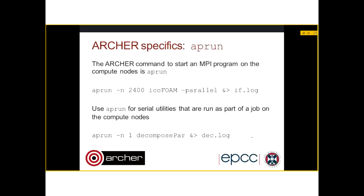You should all know that mpirun does not exist on Archer — it's aprun. So when you're running a parallel application, it'll be 'aprun -n' times the number of processes and '-parallel'. If you're also running serial utilities as part of a job on the compute nodes, make sure you use aprun as well — 'aprun -n 1' will run as effectively one task. Don't miss this out. If you run your serial utility on the job launcher nodes, this causes problems for the batch system and for other users who are using those job launcher nodes.